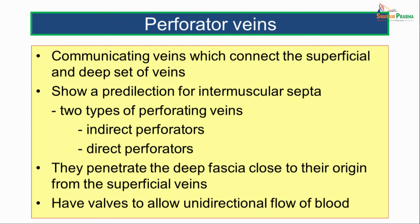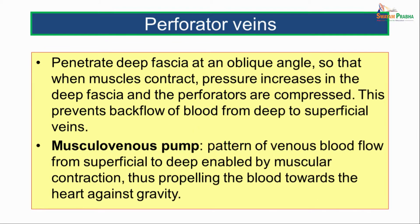Moving on to the perforator veins. These are communicating veins which connect the superficial and deep set of veins. They show a predilection for the intermuscular septa. There are two types: indirect perforators and direct perforators. They penetrate the deep fascia close to their origin from the superficial veins and have valves which allow unidirectional flow of blood from the superficial veins to the deep veins. They penetrate the deep fascia at an oblique angle so that when the muscles contract, pressure increases in the deep fascia and the perforators are compressed, preventing backflow of blood from the deep to the superficial veins.